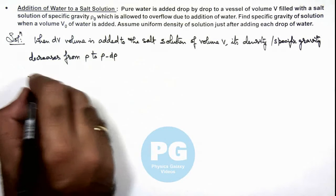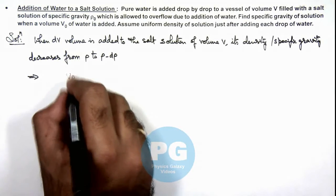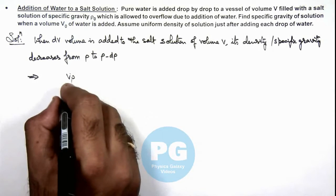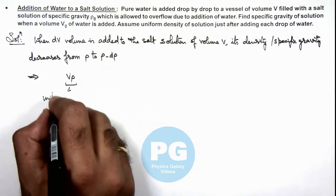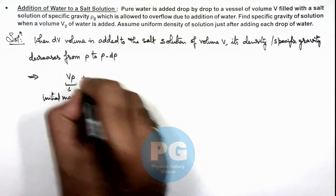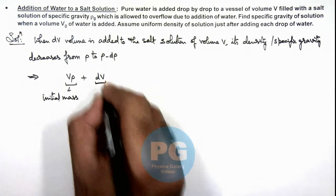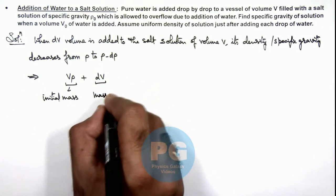This implies we can say if initial mass of salt solution is Vρ, here we can write this is the initial mass. If we add a volume dV then dV would be the mass of water.